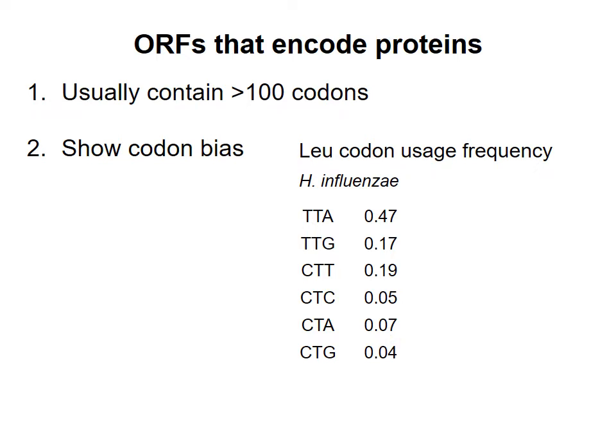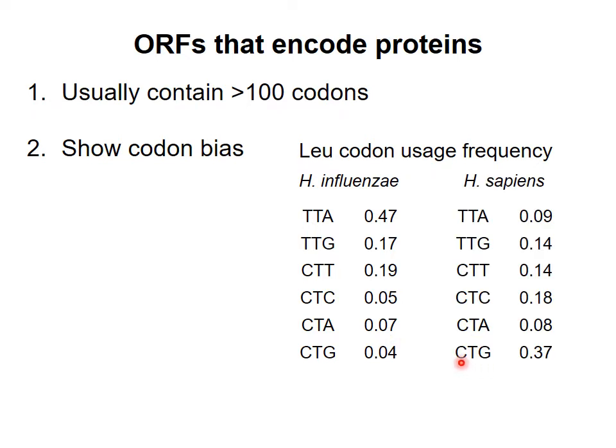In contrast, in humans, CTG is the most common codon for leucine, with TTA ranking fifth out of the six. CTG is the least used codon for leucine in H. influenzae. So when looking for open reading frames encoding proteins in a genome, we should consider whether the codon usage reflects the codon bias of the organism, if that is known.